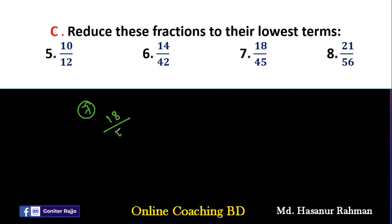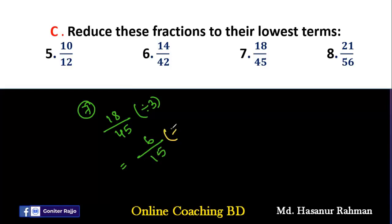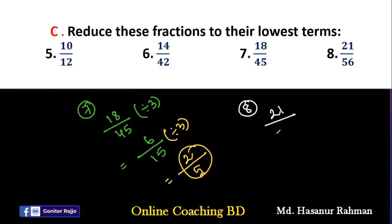Number 7 says 18/45. We divide by 3: 18÷3=6 and 45÷3=15. Now divide 6 and 15 both by 3 again: 6÷3=2 and 15÷3=5. So 2/5 is the final answer. Number 8 says 21/56. We divide by 7: 7×3=21 and 7×8=56. So 3/8 is the lowest term of 21/56.